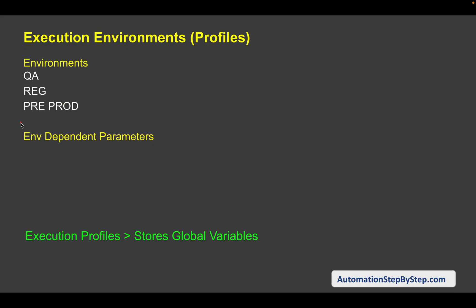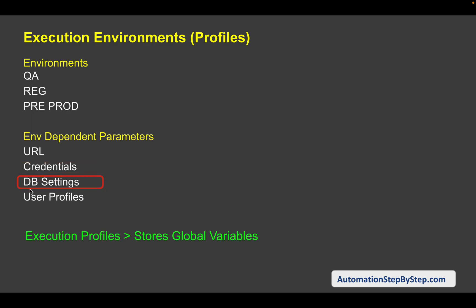All this is not very efficient — there is manual intervention, and whenever you need to make changes, you have to go and make changes everywhere. So therefore we have profiles. We have environment-dependent parameters in our tests, for example the URL, credentials like username and password, database settings, and user profiles. We need a way to handle these changes without making copies of test cases or changing values manually for different environments.